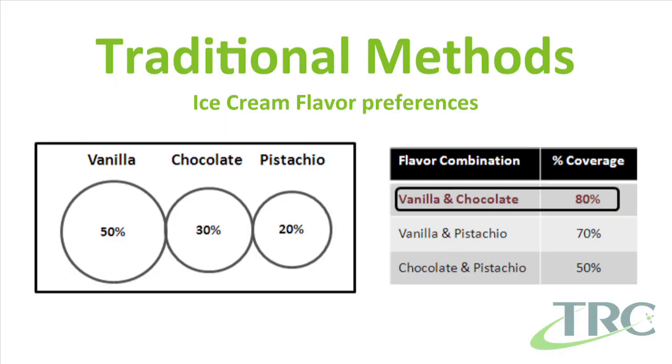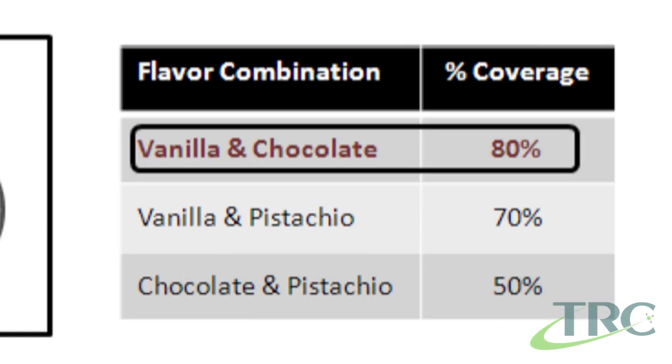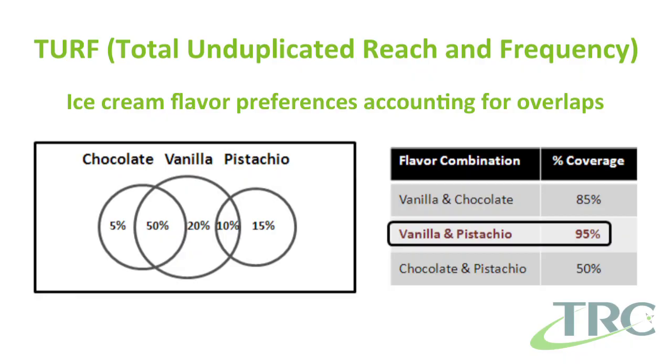Conventional wisdom might say put the most popular flavors in your cart, but what if people who buy chocolate would also buy vanilla and vice versa? Even though those are the two most popular flavors, you could probably satisfy one customer with either flavor. What if pistachio lovers tend to want pistachio and nothing else — if it's not in the cart, they won't buy anything? TURF is made to uncover niche markets like this and help you get the most out of always-limited marketing and product development resources.